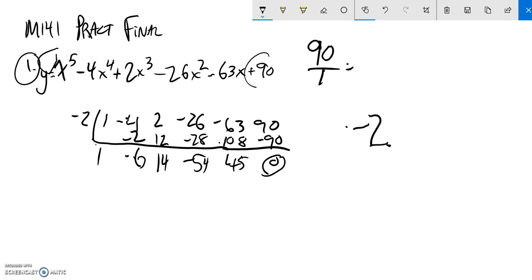This pen is messing up. Let me try another possibility - I'll try the number 1 and see if it works. Bring it down, multiply, add, multiply, add, multiply, add. Oh nice, that works out. Multiply, gives me another zero. So negative 2 and 1 are zeros.